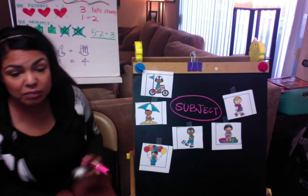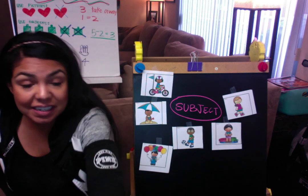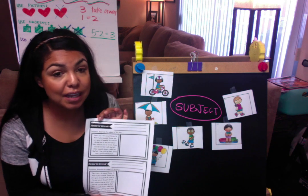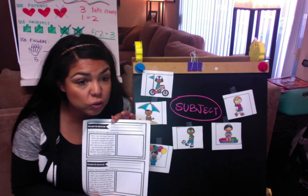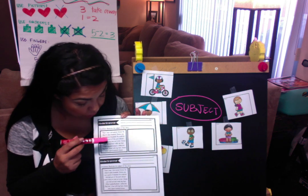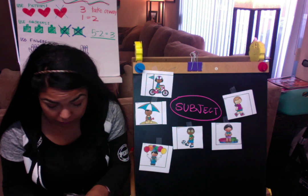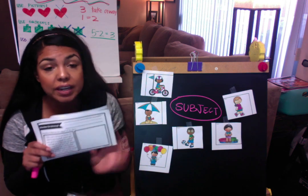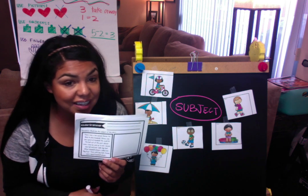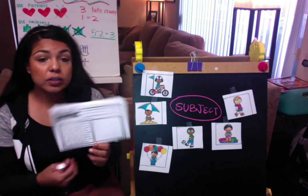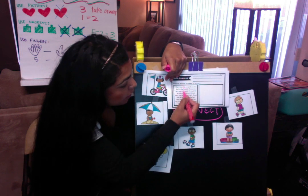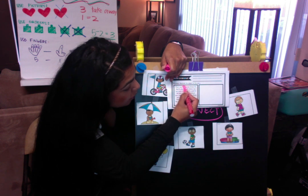So now that we have learned what the subject is and how to find it, we're going to see if we can find it all on our own. You guys will have one story here. On the story, you guys will circle the subject or highlight the subject any way you want to do it — you can highlight it or circle it, any way you want is fine.